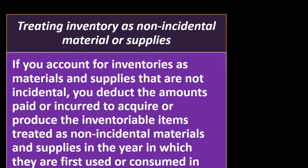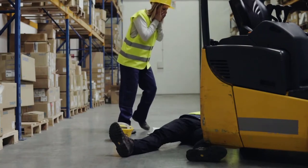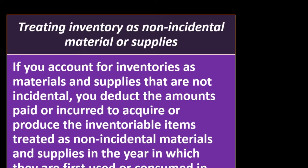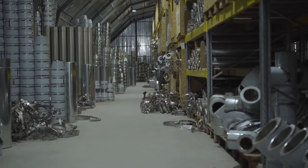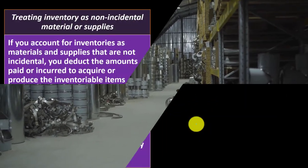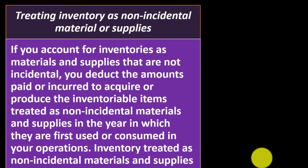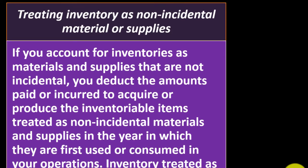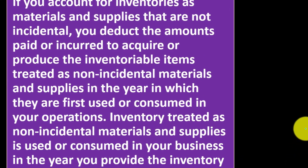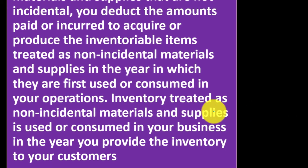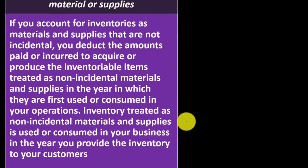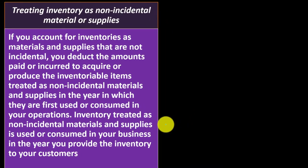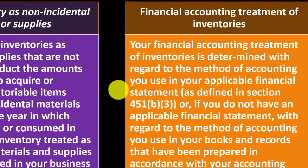Treating inventory as non-incidental materials or supplies. If it was incidental, that might be one of those exceptions where you can still use the cash method. For non-incidental: if you account for inventory as materials and supplies that are not incidental, you deduct the amounts paid or incurred to acquire or produce the inventoriable items treated as non-incidental materials and supplies in the year in which they are first used or consumed in operations. Inventory treated as non-incidental materials and supplies is used or consumed in your business in the year you provide the inventory to your customers — that's an accrual kind of component.